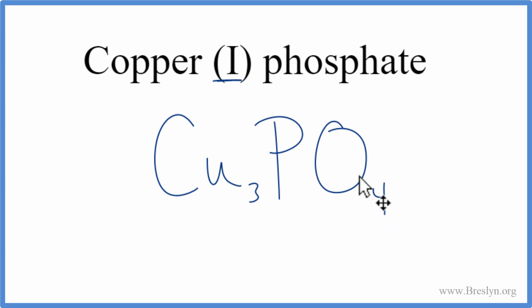Cu3PO4. That's the formula for copper(I) phosphate. Let's check our work, make sure we got that right. We said copper, because of this Roman numeral, is 1+, and we looked up the phosphate was 3-.